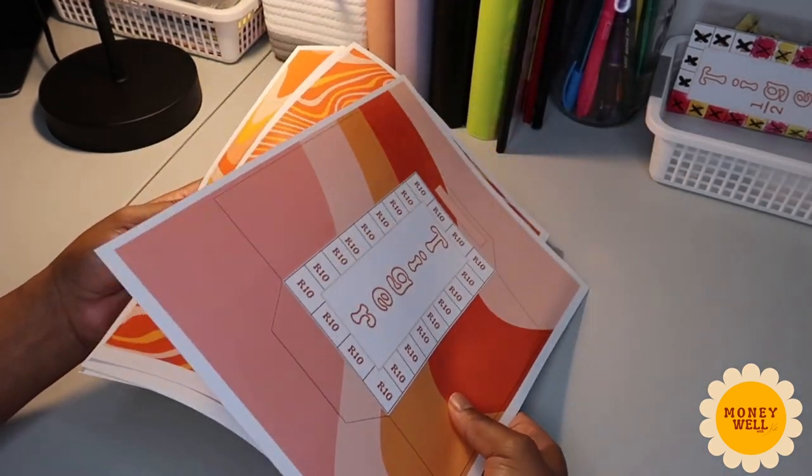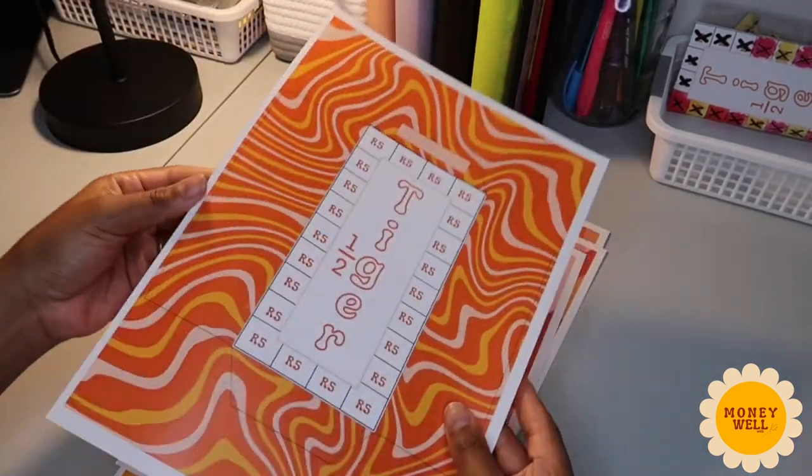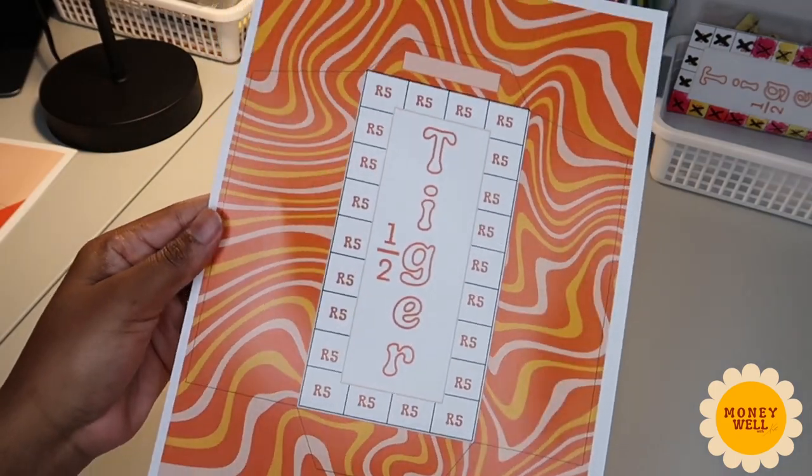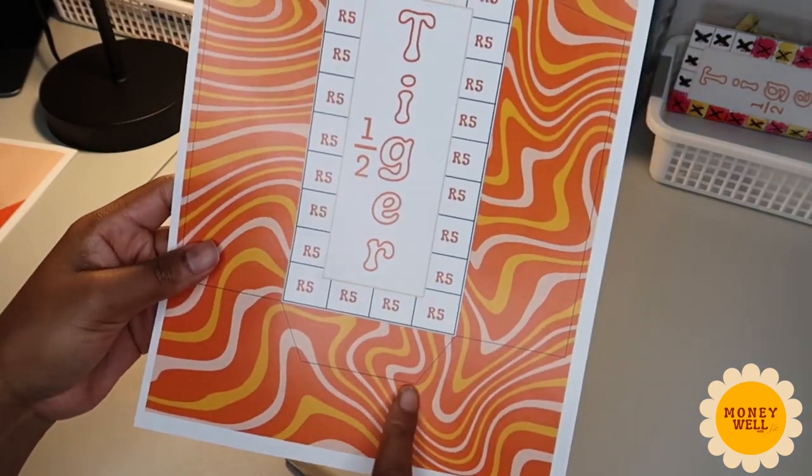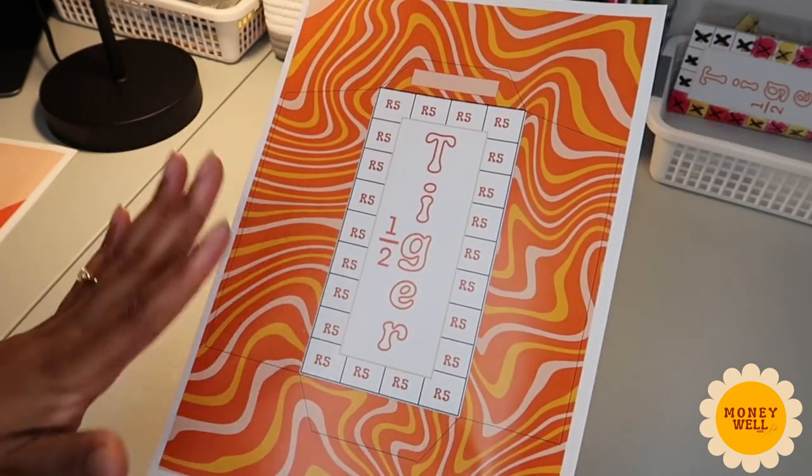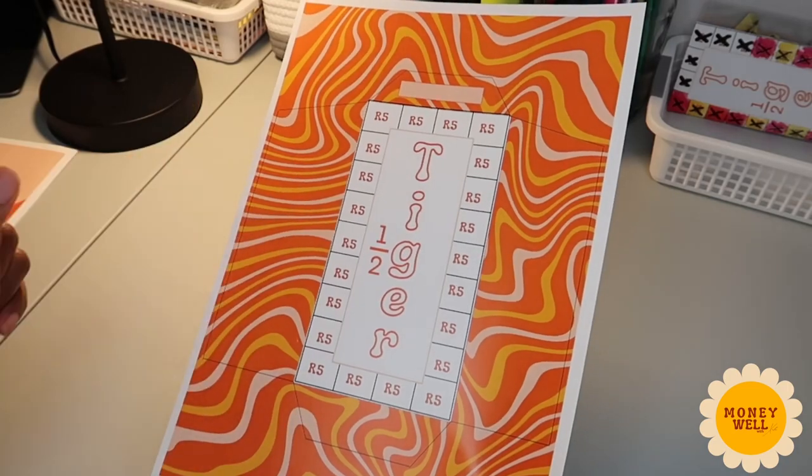So this is how they will look and I'm going to demonstrate using the half tiger envelope. Let me just bring that closer so that you can see the lines where you will be cutting. So everything is just set out easy. You just print it out, cut, put it together and then you're good to go.